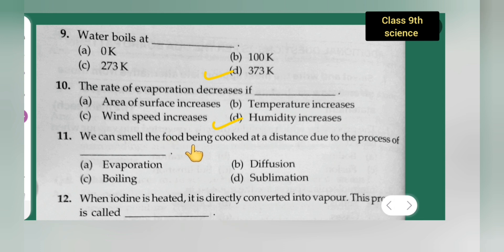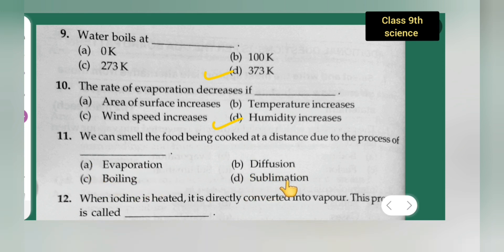Question 11: We can smell food being cooked at a distance due to the process of — option A is evaporation, option B is diffusion, option C is boiling, option D is sublimation. The correct answer is diffusion — you can mark option B.